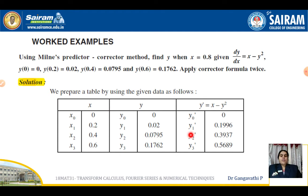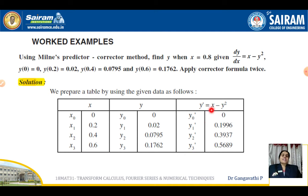Similarly, y₂' is y' evaluated at x₂ and y₂, giving 0.3937. And y₃' is y' evaluated at x₃ = 0.6 and y₃ = 0.1762, giving y₃' = 0.5689. These are the required derivative values.